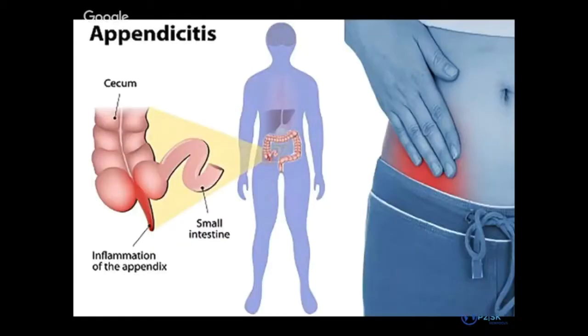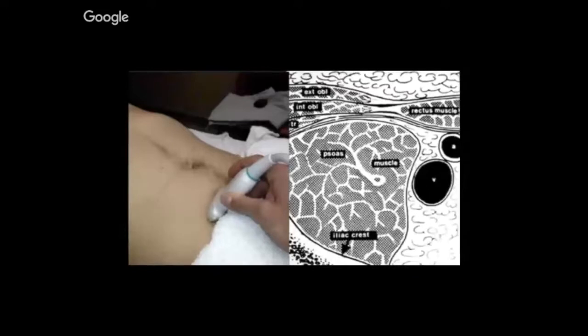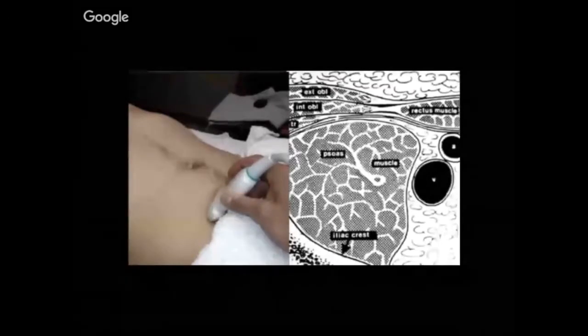Let's start with a brief review of how we actually perform the scan. Your area of interest will be in the right lower quadrant where the appendix usually lives. The transducer of choice for appendicitis POCUS will be the high-frequency linear transducer. Since the appendix is usually quite superficial — the younger and thinner the children — the higher resolution transducer you would want to use. Your anatomical landmarks in the right lower quadrant are the psoas, sitting on top of the iliac crest and lateral to the iliac vessels.